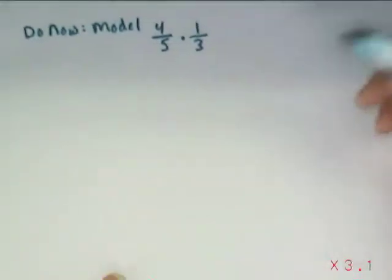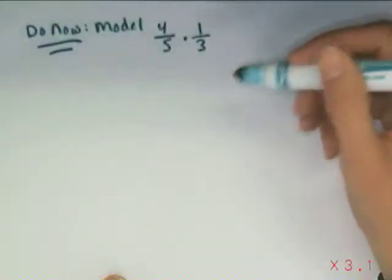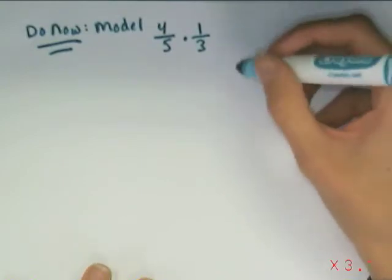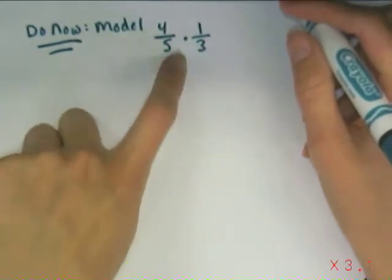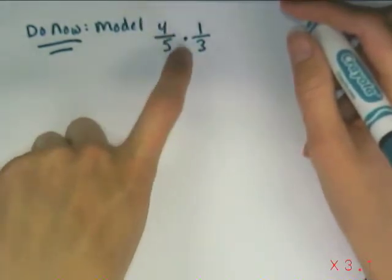Anytime we get to a do now section, you're going to go ahead and pause it and try this on your own before you unpause it to look for the solution. So right now, please model the fraction multiplication, 4 fifths times 1 third.